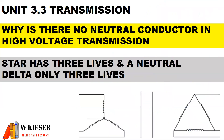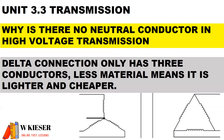Why is there no neutral conductor in high voltage transmission? If you look at the primary side, which is star connected, it has three lives and a neutral. However, on the secondary side, for delta there are only three wires which make up our three phases — there is no neutral wire. Therefore, a delta connection only has three conductors, meaning less material, making it lighter and cheaper.